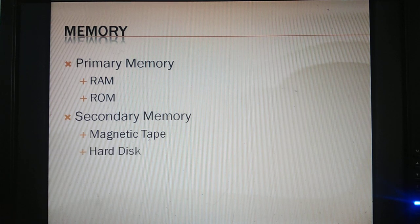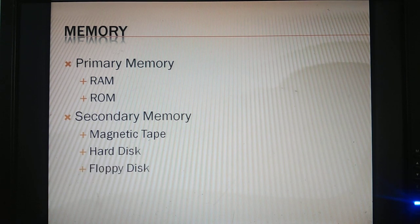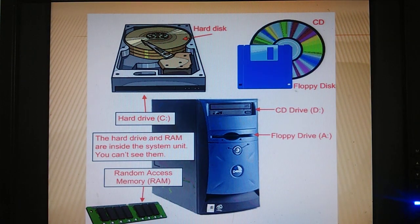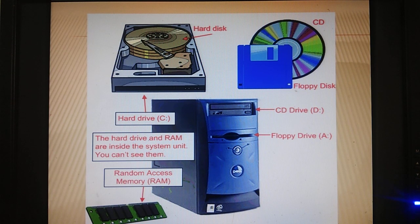We have two or three types of memory. Primary memory and secondary memory. Primary memory includes RAM — random access memory — and ROM — read only memory. Secondary memory includes magnetic tapes, hard disk, and floppy disk. Hard disk stores data. Floppy disk holds 1.4 MB of data. CD is available in different sizes.